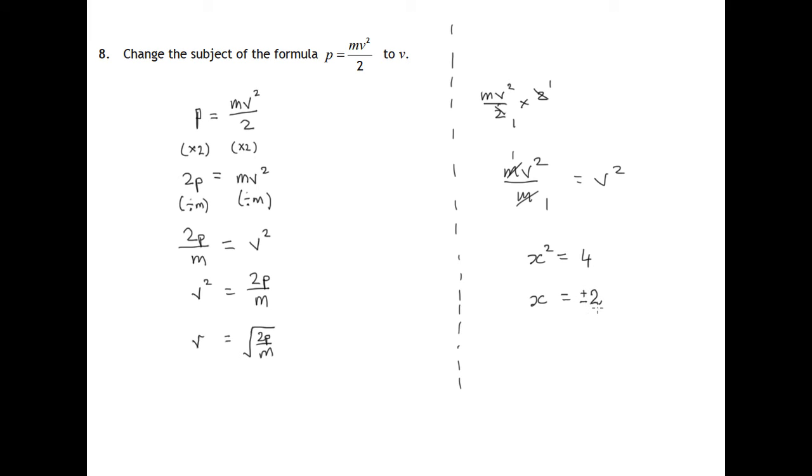Negative 2 is also a solution. Negative 2 squared would also give you 4. So when we write square root of 4, we really should have a plus minus in there.